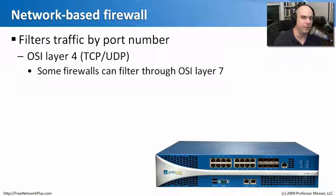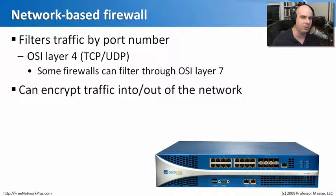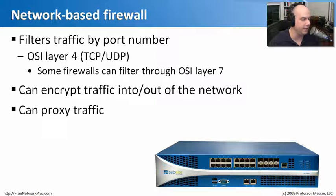The firewall can determine if traffic is Skype-type traffic, web browsing traffic, or a peer-to-peer application, and decide what to do with it. It can also encrypt and decrypt traffic. If you're running SSL, many large enterprise firewalls can break apart and decrypt the traffic, look inside of it, re-encrypt it, and send it on its way. A lot of really advanced functionality and speed in these network devices.